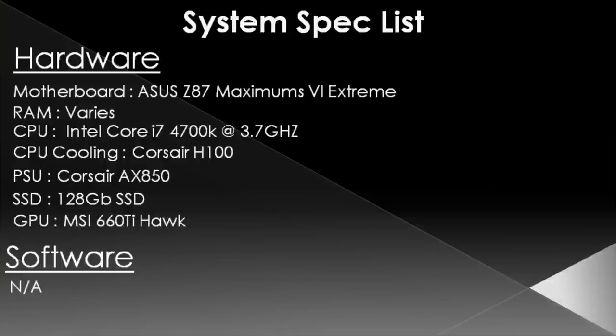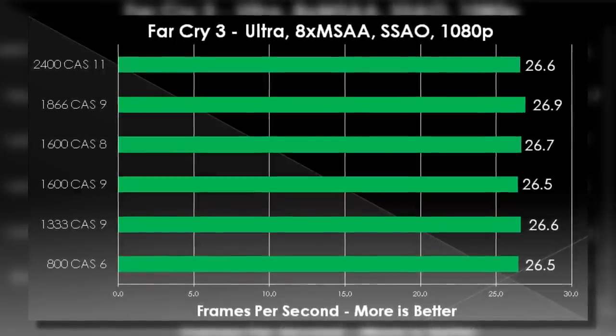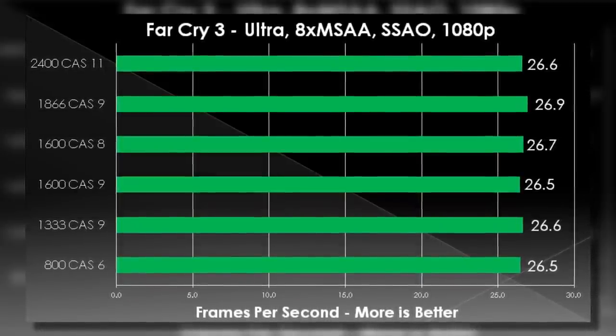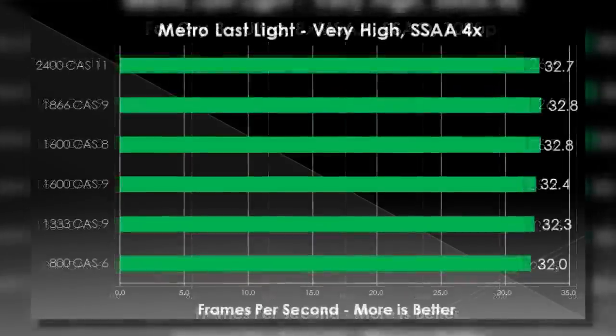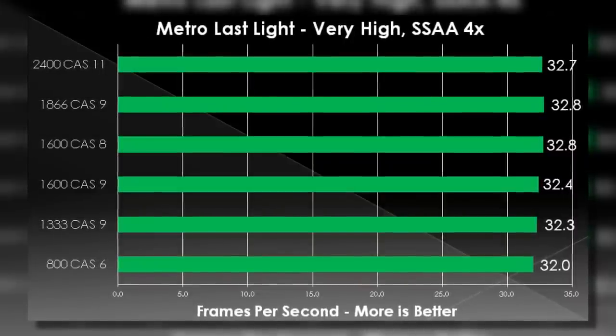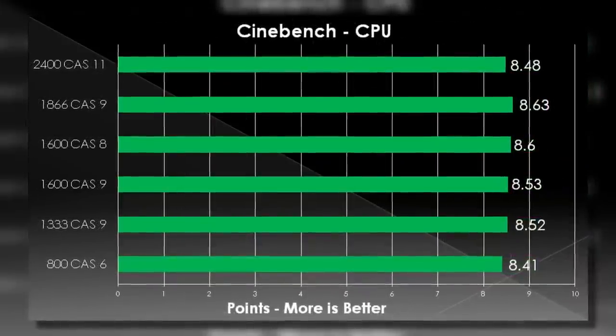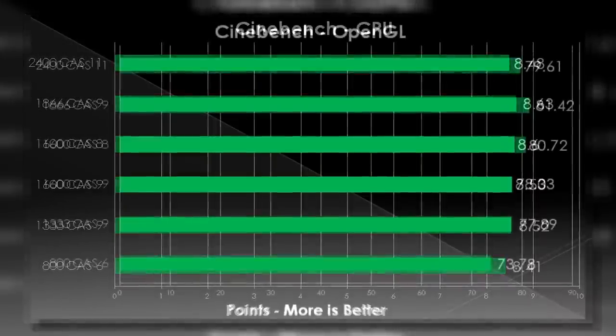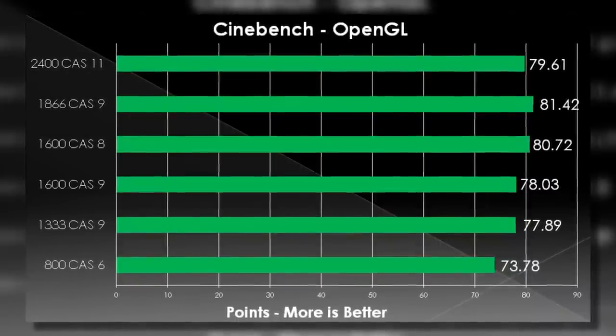We ran two games as well as Cinebench, just to give some idea how it runs in games versus synthetics. Looking at the graph, if you're running the same capacity RAM at all these different speeds, you're looking at not a whole lot of difference in performance. What often happens with higher bandwidth — higher frequency RAM — is that it tends to sacrifice latency. And as you tighten up latencies, you tend to sacrifice the maximum frequency, to the point where they actually cancel each other out a lot. You end up spending more money for higher frequency RAM that might look better on paper but doesn't really deliver much in terms of better real-world performance.